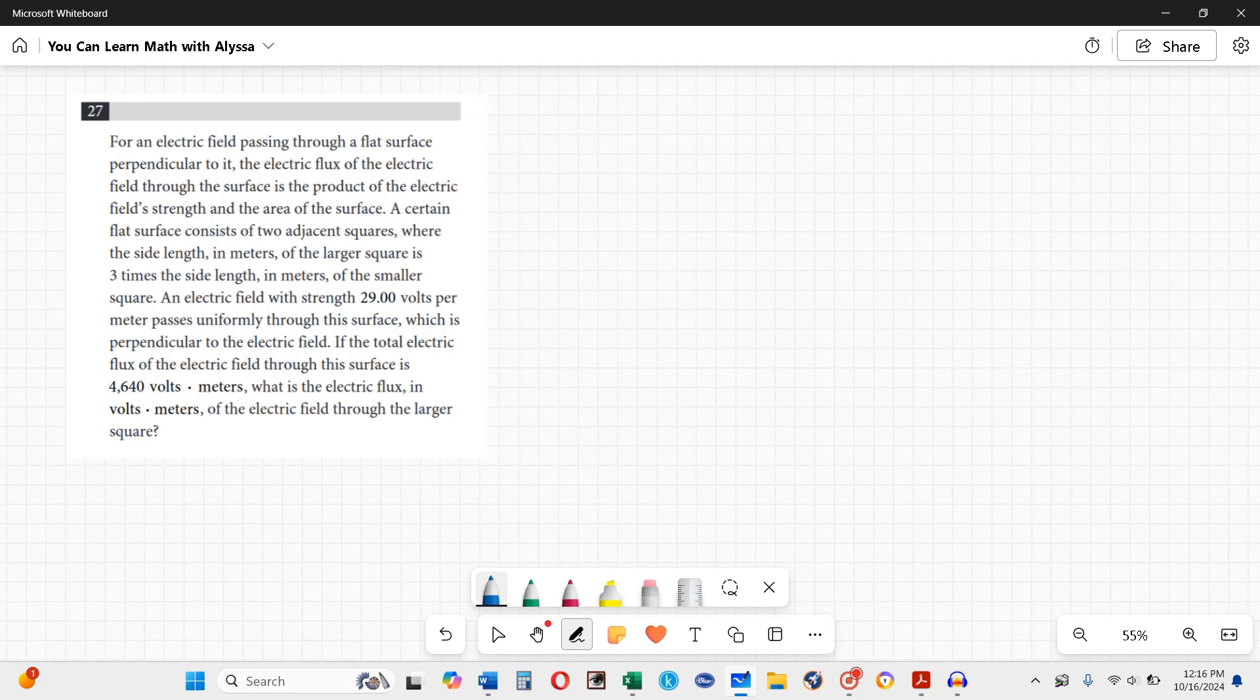There's a couple different ways to do this. There's a shortcut way and then there is a longer way. I'm going to show you both. The initial idea is we have this flat surface, we have an electric field passing through at a right angle, and we are given a formula. The formula is right here, the electric flux equals the product of the electric field's strength and the area.